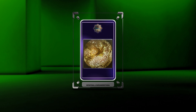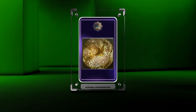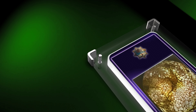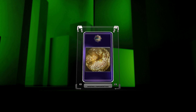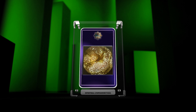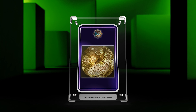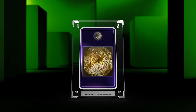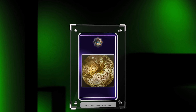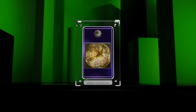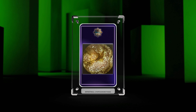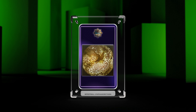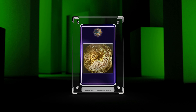Gastrointestinal lymphangiectasia refers to the dilatation of lymphatic vessels in the walls of the gastrointestinal tract. This condition can lead to impaired lymphatic drainage, causing various manifestations including malabsorption, protein-losing enteropathy, and immunodeficiency. The study of intestinal lymphangiectasia involves a comprehensive understanding of the anatomy and physiology of the lymphatic system and the pathophysiology of impaired lymphatic drainage.